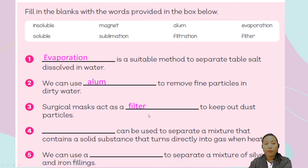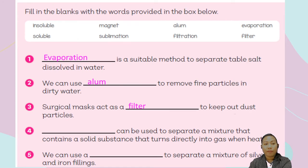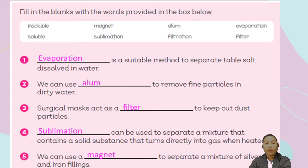Number three: a surgical mask acts as a filter to keep out dust particles. Number four: sublimation can be used to separate a mixture that contains a solid substance that turns directly into gas when heated. And number five: we can use a magnet to separate silver and iron filings.